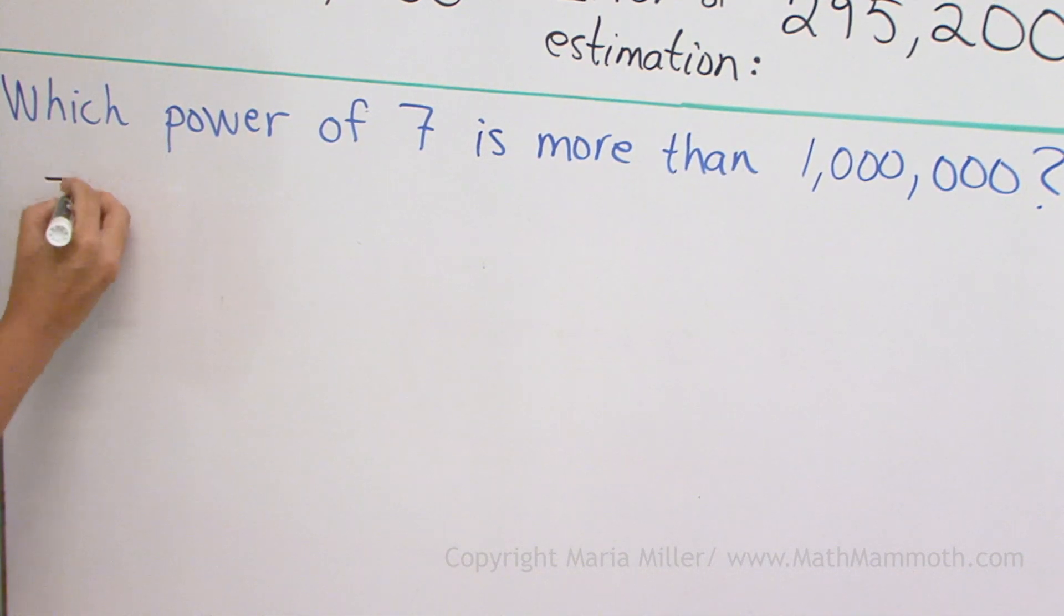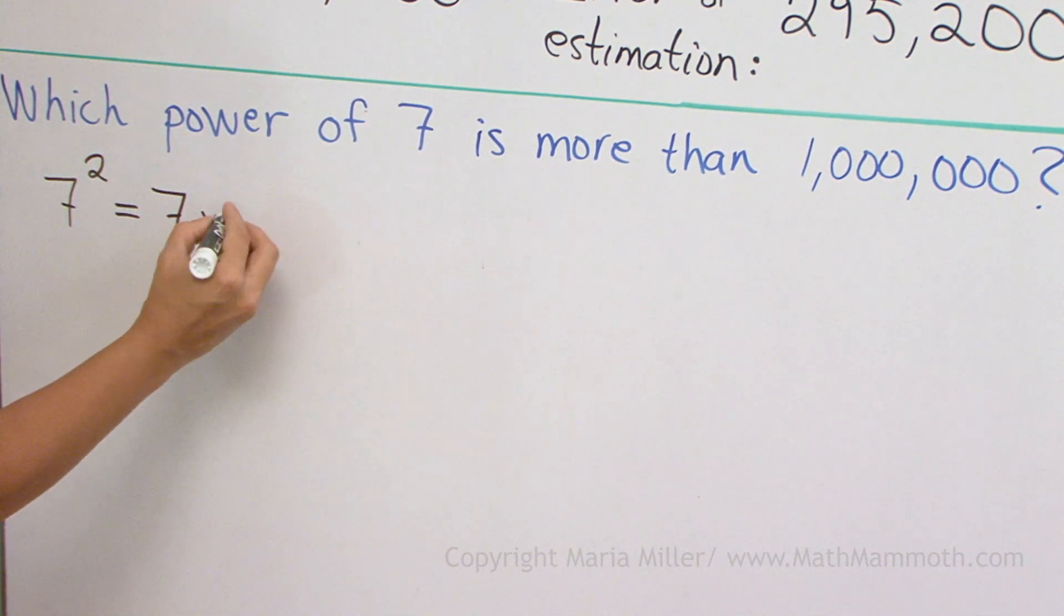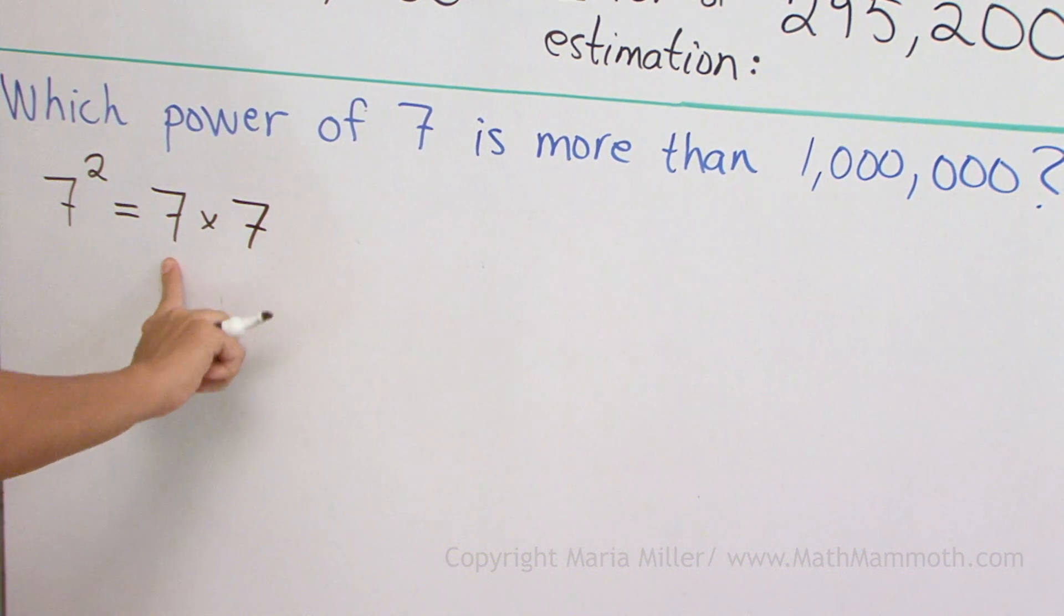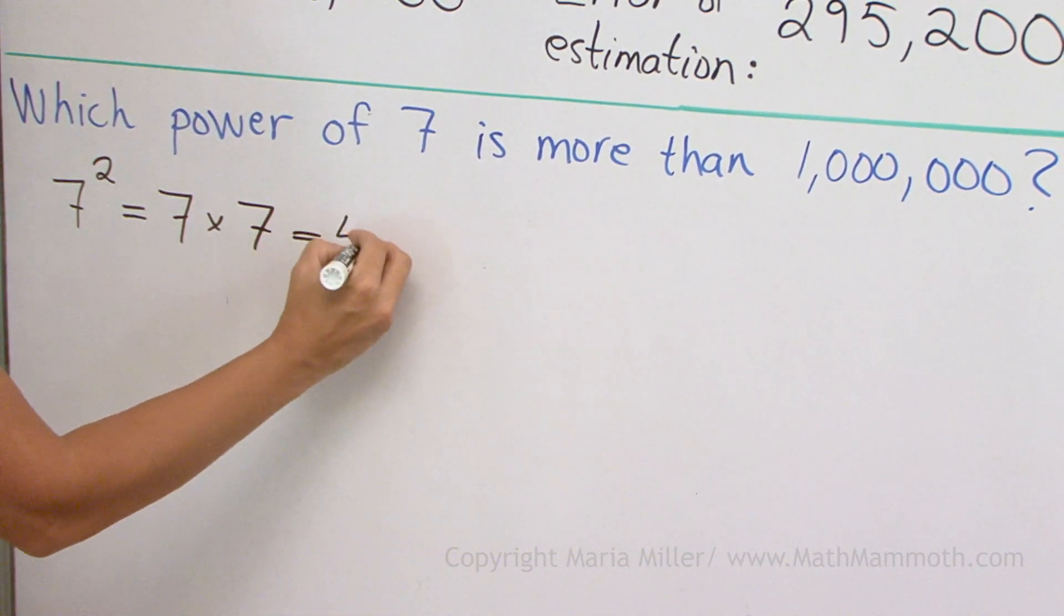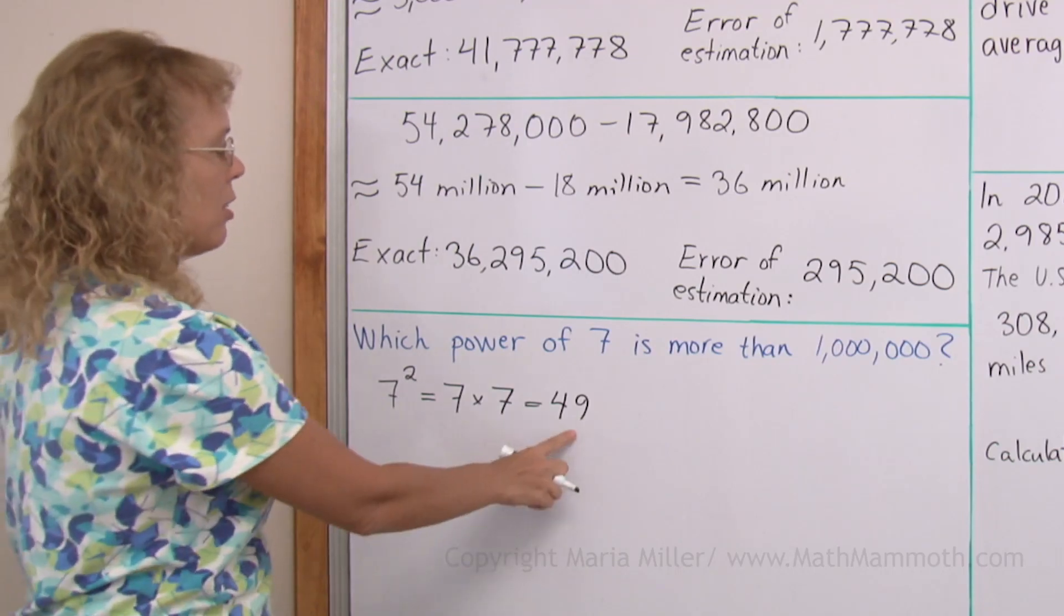For example, seven to the second power, which is also called seven squared, means seven times seven, seven multiplied by itself two times, so we get 49. That's not yet more than one million.